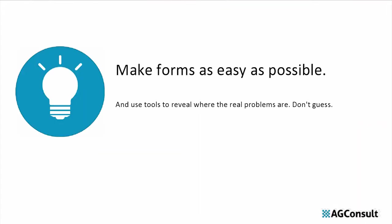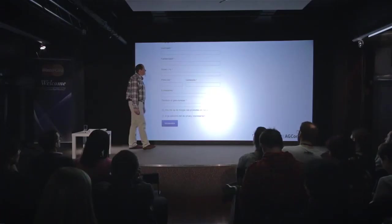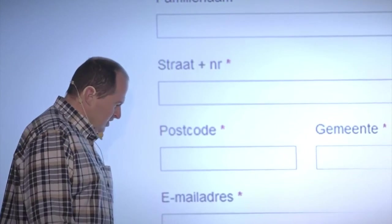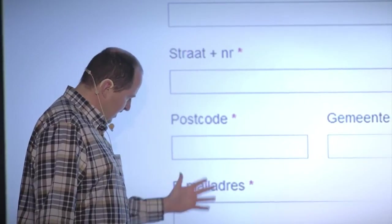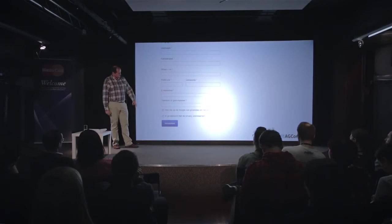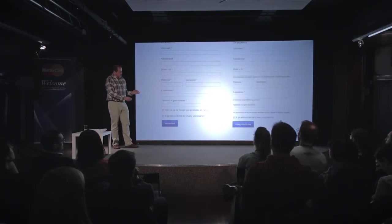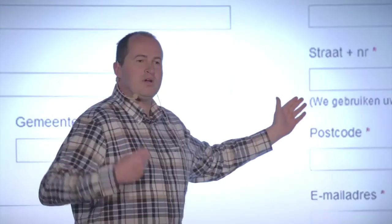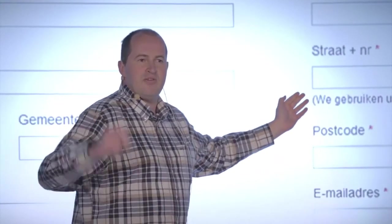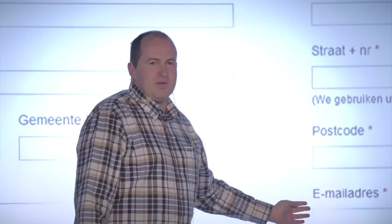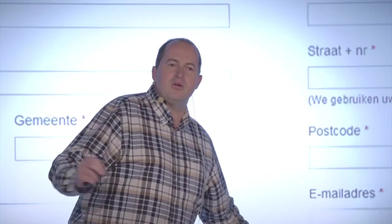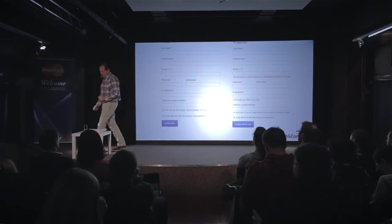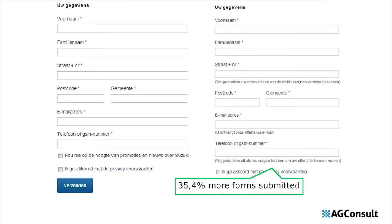Make forms as easy as possible. Another thing we learned from Formisimo was that some fields took users more time than expected — there was clear hesitation when users needed to give their street address, email address, and phone number. So we added a little explanation with those fields: why we were asking for that information. We need your street so we can find the nearest dealer, we need your email address so we can send you our proposal, and we'll only call you when we need more information to finalize your offer. Those small changes resulted in 35 percent more people filling in the form.